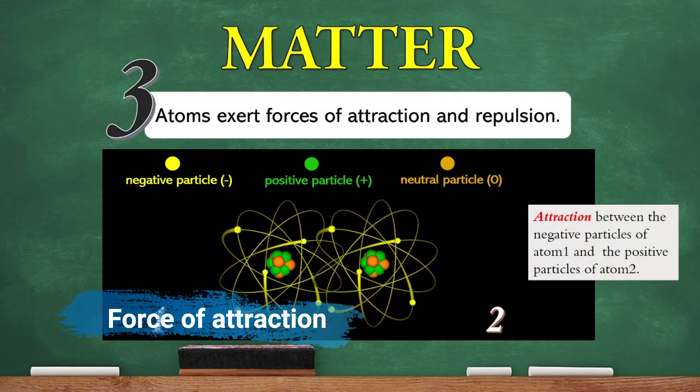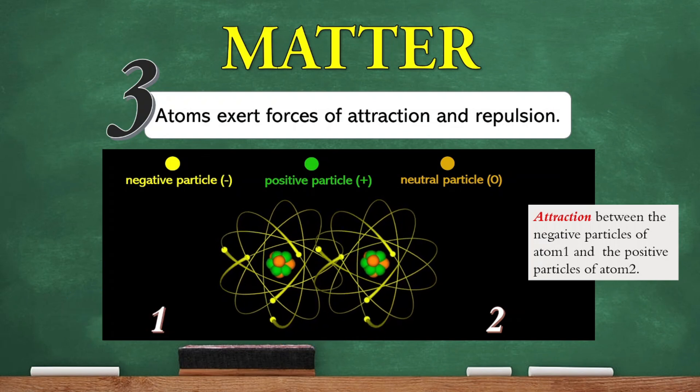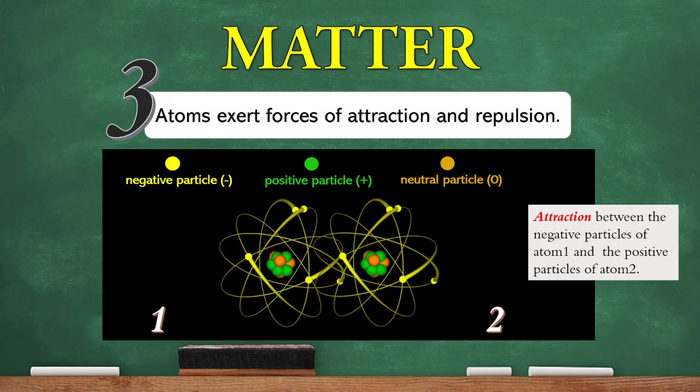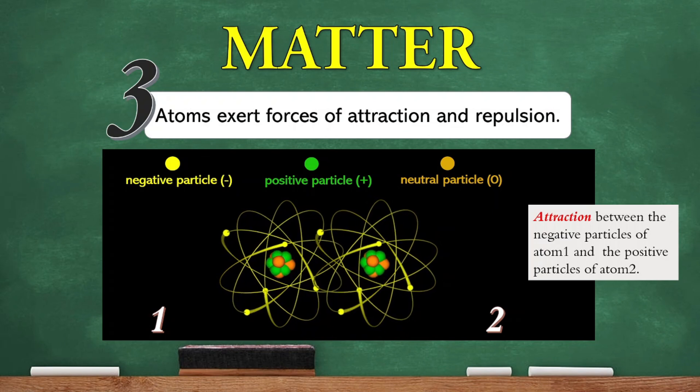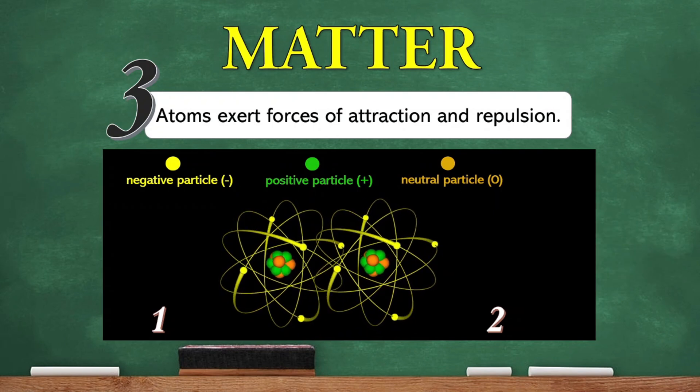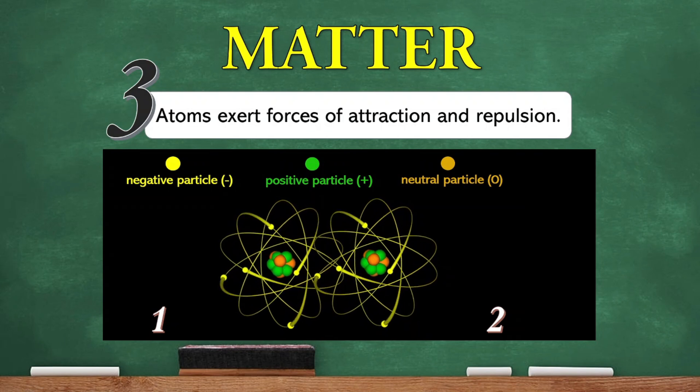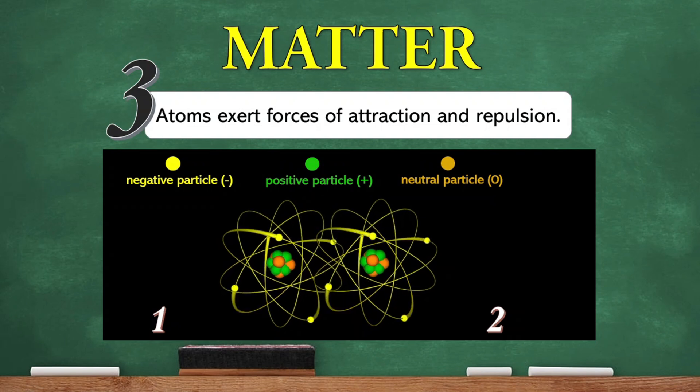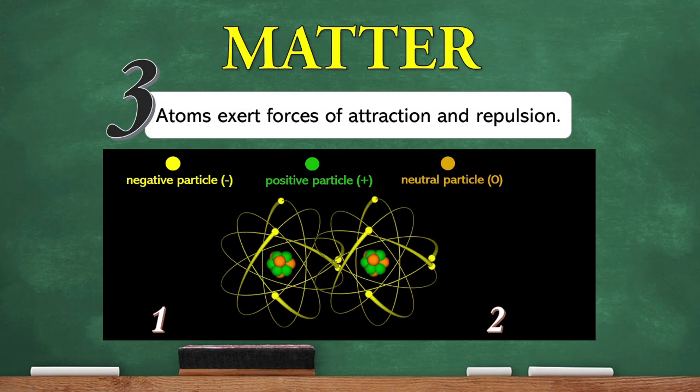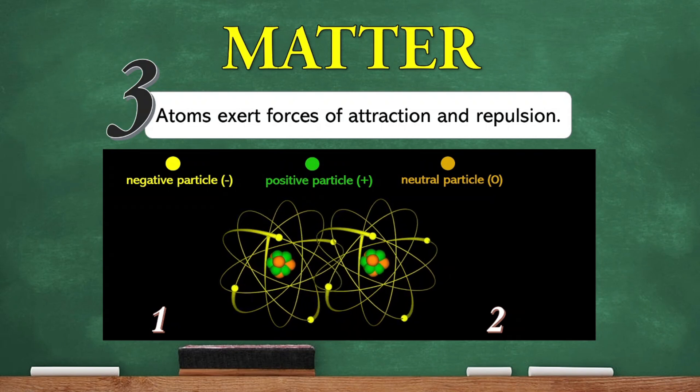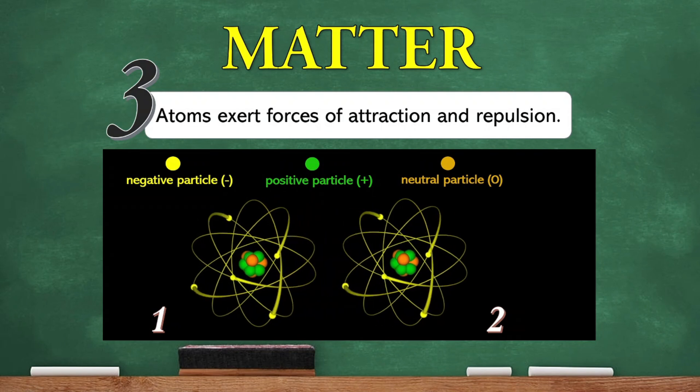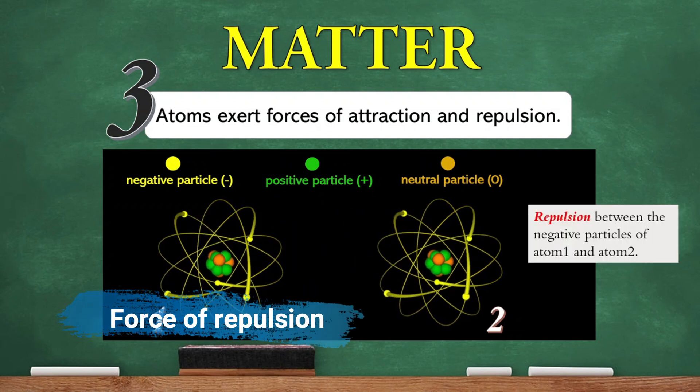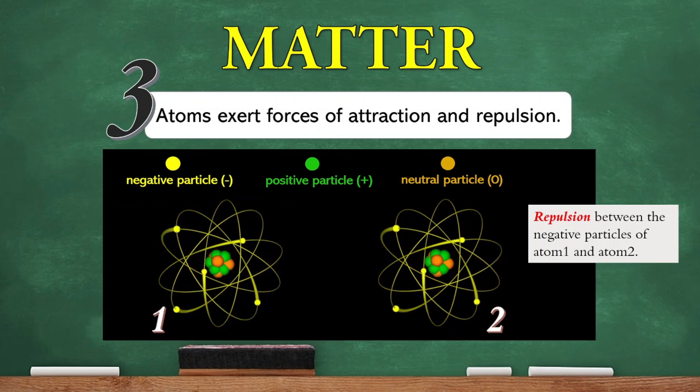The attractive force is created by the attraction between the negative particles and the positive particles between the two atoms. On the other hand, when the atoms get too close to one another, you will notice that the surrounding negative particles between the two atoms are also very close to one another. Since the negative particles are too close to one another, this causes the atoms to repel one another. The force of repulsion exists when the negative particles of the two atoms are too close to one another.